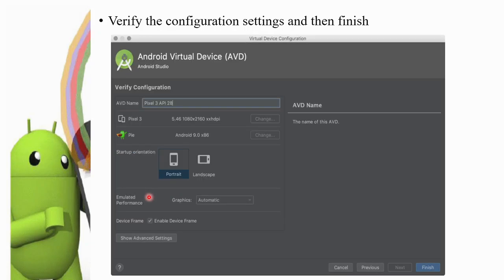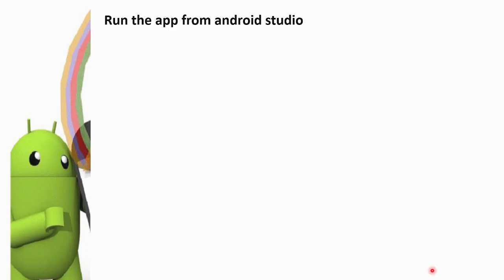After downloading the files, we verify the configuration settings and then click Finish. Then set the AVD name, and choose portrait or landscape orientation. We have now created an Android Virtual Device.